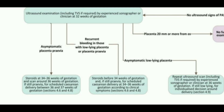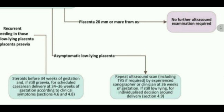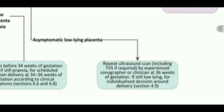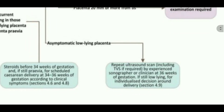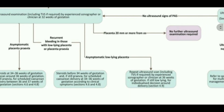For patients with asymptomatic low-lying placenta, we repeat the ultrasound scan including TVS if required, performed by an experienced sonographer, at 36 weeks of gestation. If still low-lying at that scan, we make an individualized decision around the mode and timing of delivery.